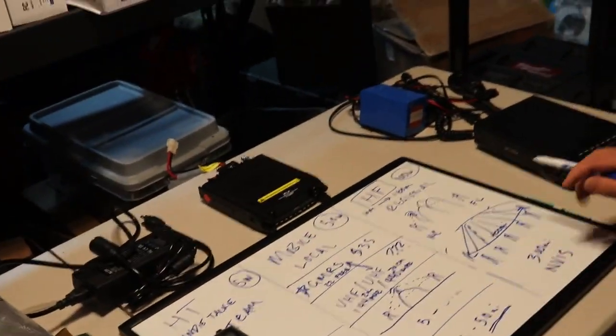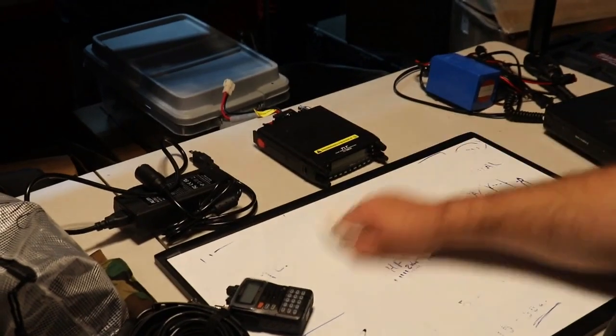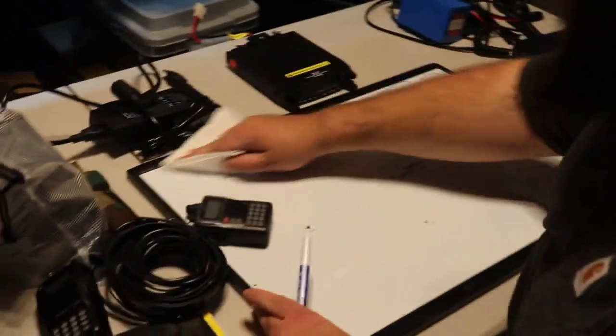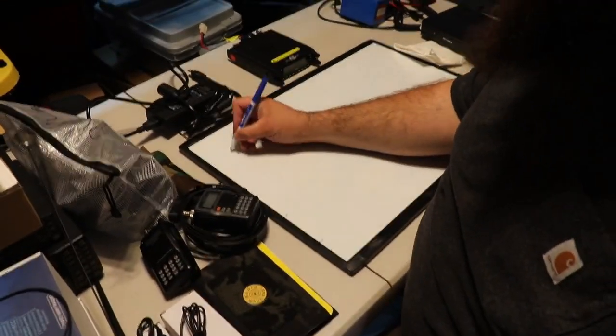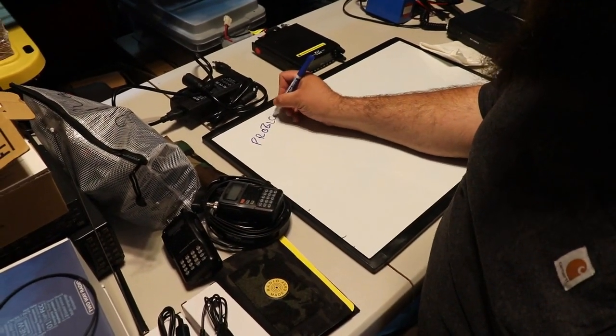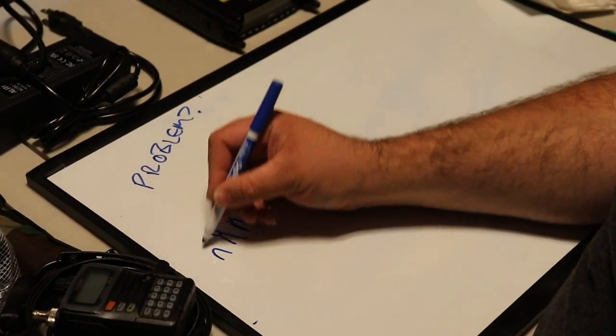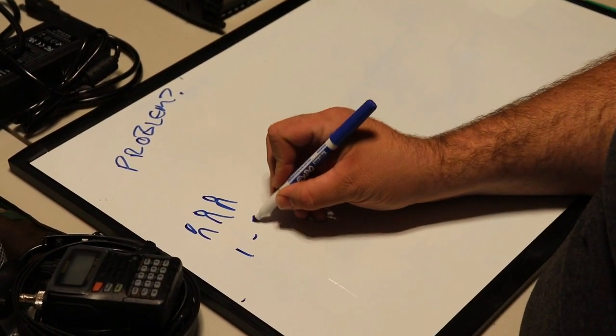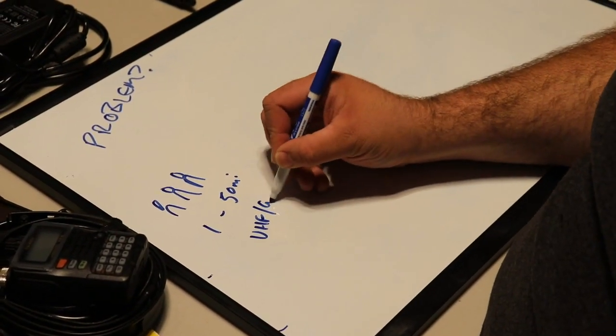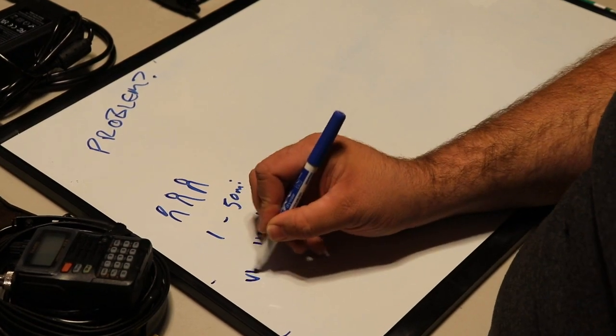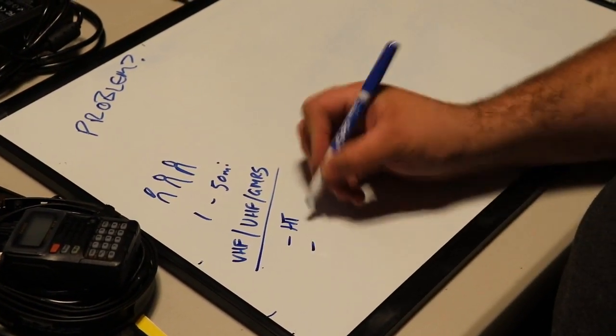So really all to think about is you got three categories. If you boil it down, you need to think about what's my problem to solve. Am I in a small group of people dispersed within one to, let's call it 50 miles that might be pushing it, then UHF, GMRS, VHF is a part of that as well. That's a good option for you.